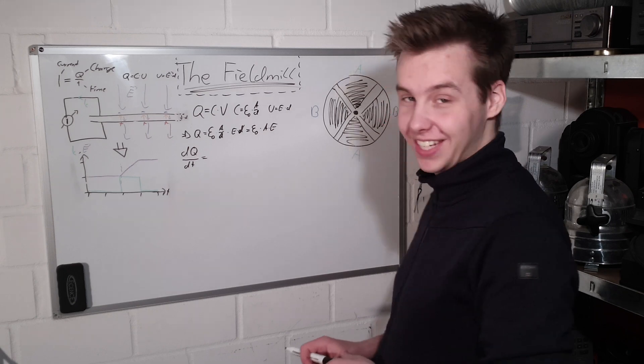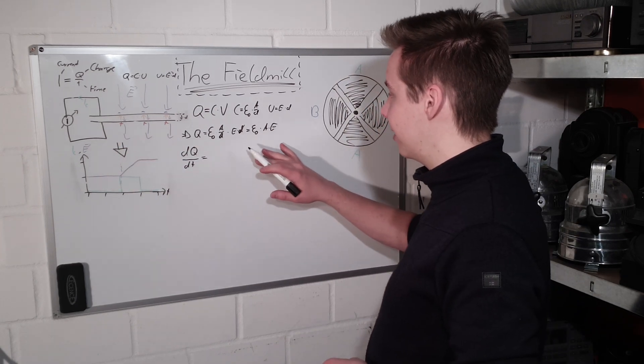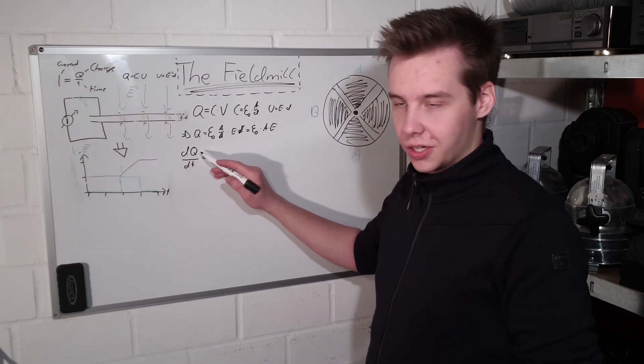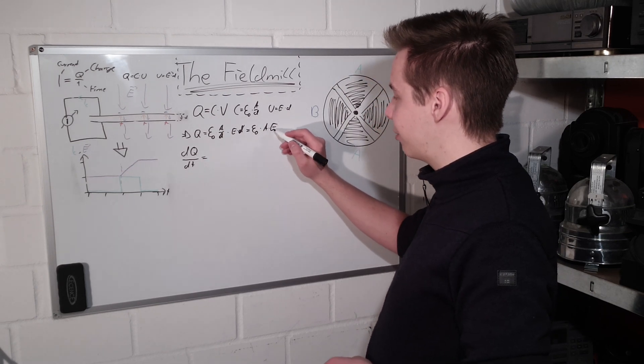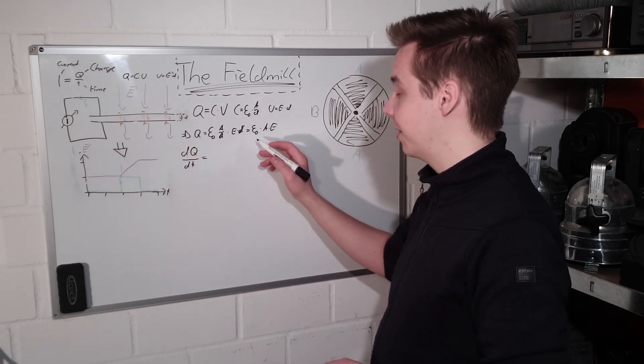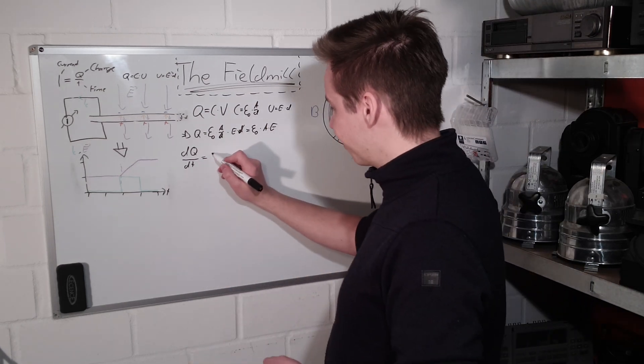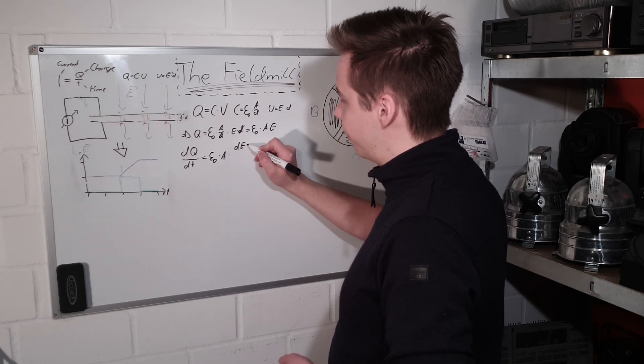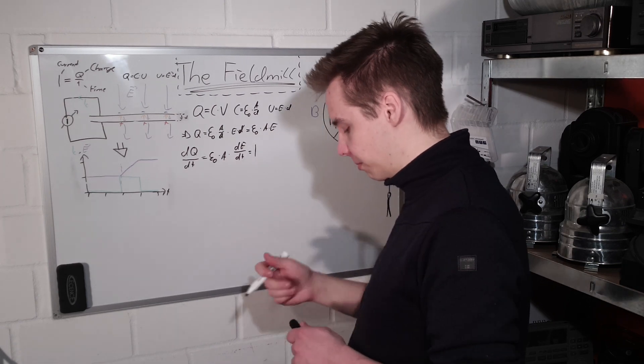To figure out what current is flowing, we just need to differentiate the equation over time. We just take the difference in charge over the difference in time. And if we look at this, we can see only the electric field is actually changing. Everything else is constant. We can simplify this to be epsilon zero times A times the difference in field over the difference in time. And this is our measurement current.